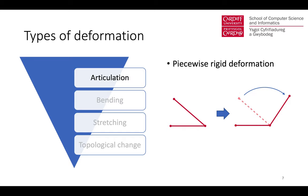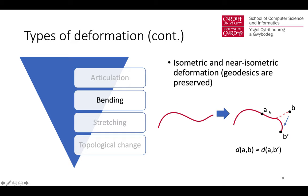There are different types of deformations common in practice. These include articulation, which is piecewise rigid deformation, and bending, which means the shape deforms while preserving geodesic distances. We consider isometric or near-isometric deformation, where the distance from A to B is largely preserved when it is bent to B prime.